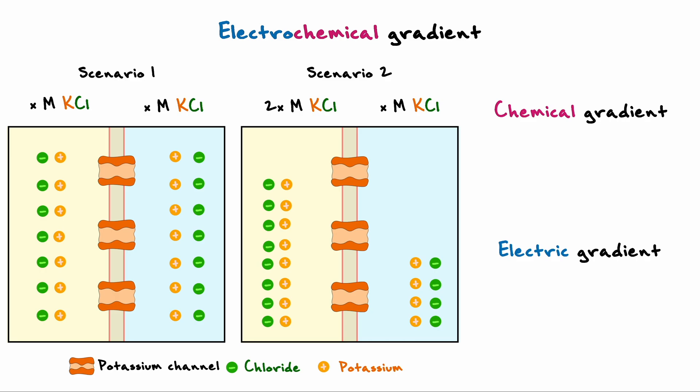Now, what you have to imagine is that the movement of ions is always dictated by how they can equilibrate the system. In terms of the chemical gradient, this means that the ions will always move from a region of high concentration to a region of low concentration in order to balance the amounts on each side.